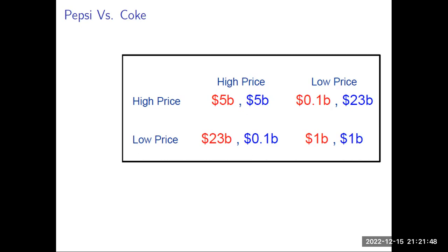But what about low prices? If you keep your prices low, and also the other firm goes for low prices, you make $1 billion, which is better than $0.1 billion.